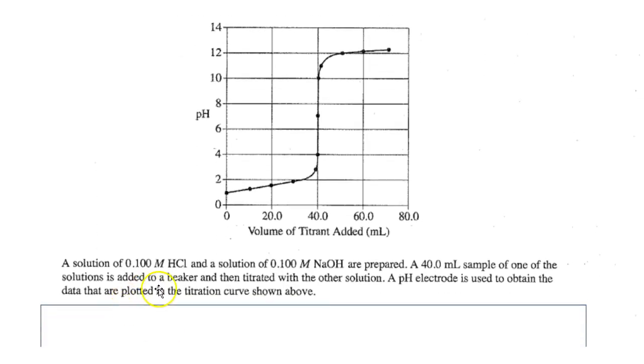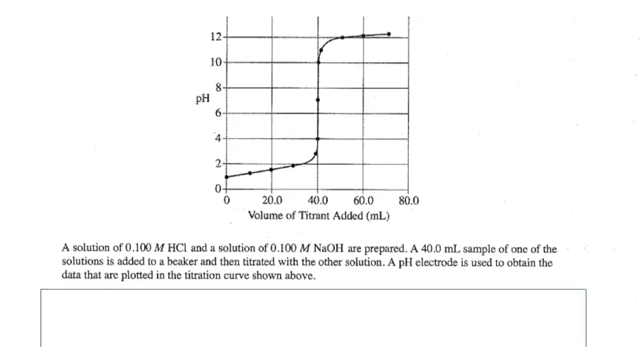Yes, a solution of 0.1 molar hydrochloric acid and 0.1 molar sodium hydroxide, those are both strong, are prepared. 40 mL of one of the solutions is added to a beaker and then titrated with the other solution. A pH electrode is used to obtain the data that are plotted in the titration curve shown above.